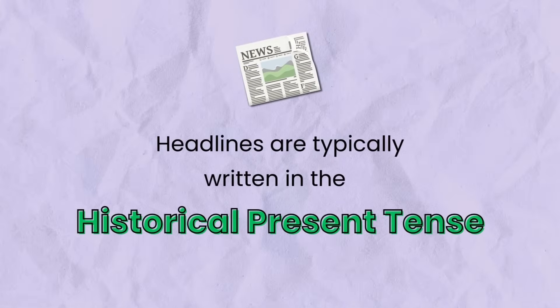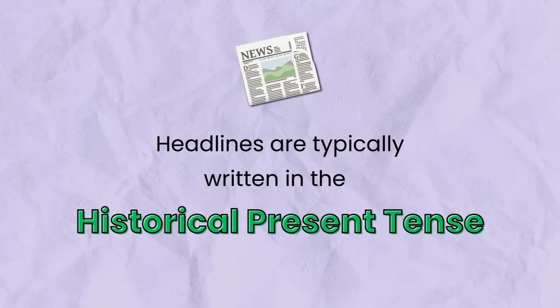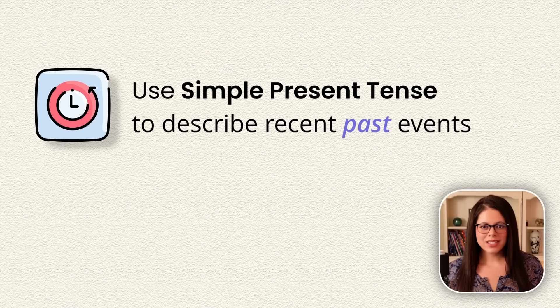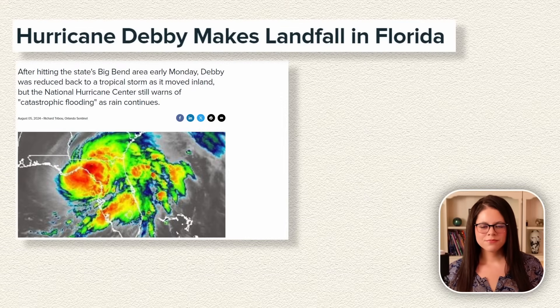My first tip for you is that headlines are typically written in the historical present tense. This means that they use simple present tense to describe recent past events. This makes the event sound more interesting or urgent. Let's look at some recent examples in the news: Hurricane Debbie makes landfall in Florida.